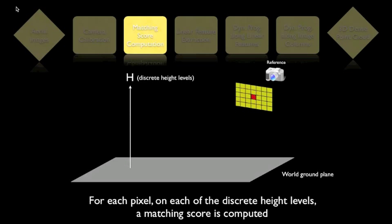Unlike traditional stereo, which follows rectified epipolar geometry, we formulate the reconstruction problem as a constrained optimization on the height level above the ground plane of each pixel in the reference image. For each pixel in the reference image, a matching score is calculated on each discrete height level.